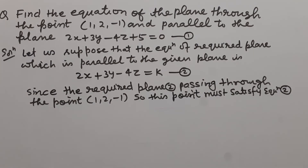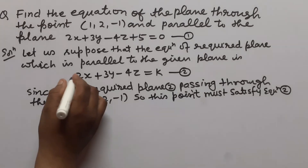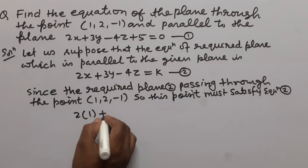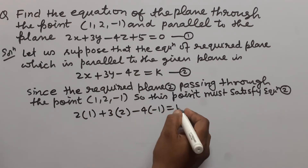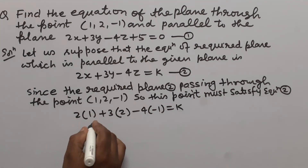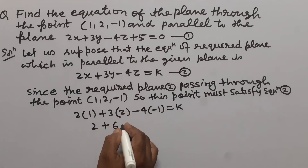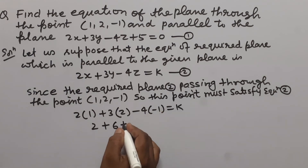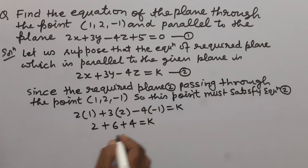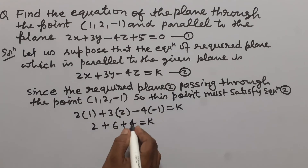It is given that the required plane passes through the point (1, 2, -1), so this point must satisfy equation 2. Putting x = 1, y = 2, and z = -1, we get: 2 × 1 = 2, plus 3 × 2 = 6, and minus 4 × (-1) gives plus 4. So 2 + 6 + 4 = 12. Therefore k = 12.